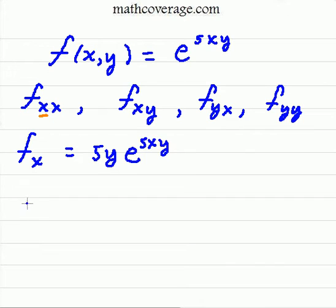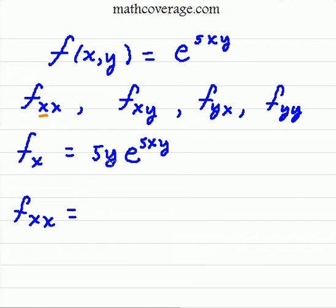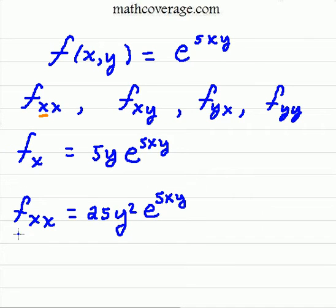Now we're going to take that second partial with respect to x — we take the derivative of this with respect to x one more time. The derivative of 5xy leaving y as a coefficient means we bring the 5y out front, and 5y times 5y becomes 25y squared, times e to the 5xy. That takes care of one of them.